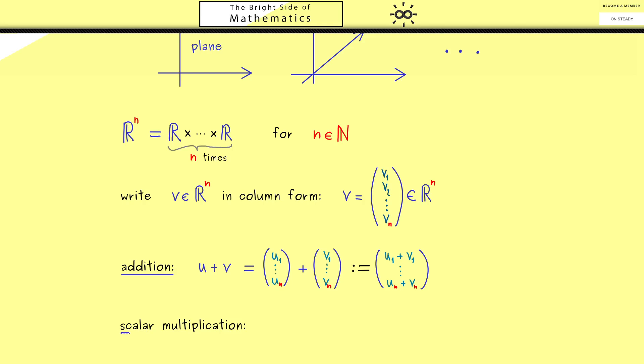So this is the resulting vector in R^n given by the vector addition. In the same way we can define the scalar multiplication. There we just multiply a real number, a scalar we call lambda, with a vector u. And as before the only meaningful definition would be to multiply each component separately. Therefore this is our resulting vector with n components again.